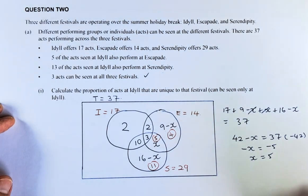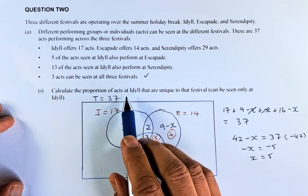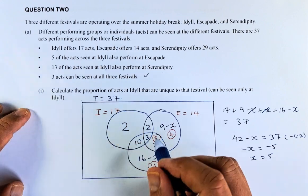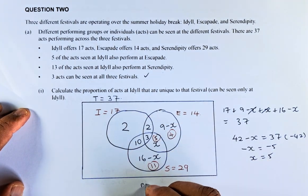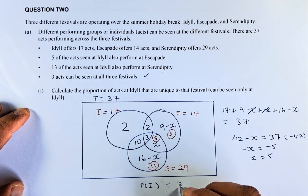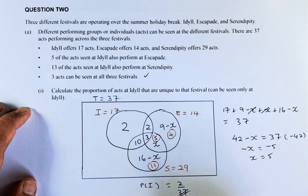And now we can calculate the probability. So the question asks you, what is the probability or proportion at Idyll that are unique to that festival? Can be only seen at Idyll. So this is the region we are going to look at. So the probability of Idyll is going to be 2 out of 37. Let me read again.